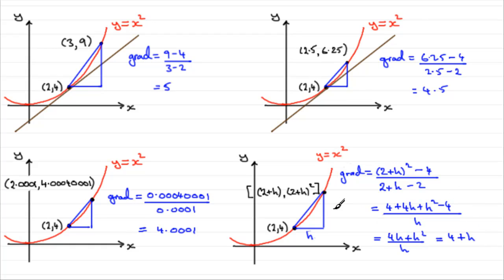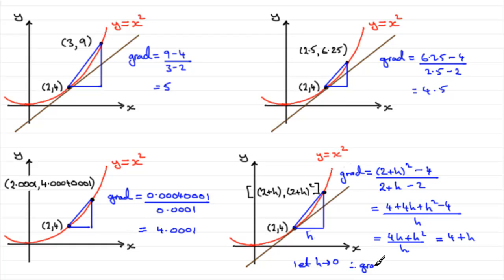Now this is the clever bit: we let this point get closer and closer to (2, 4), which means the width h gets smaller and smaller. So we let h tend to 0. As we do that, the gradient of the chord tends towards the gradient of the tangent. And what we have is that the gradient of the tangent equals 4, because h tends to 0. So therefore the gradient of the tangent equals 4.